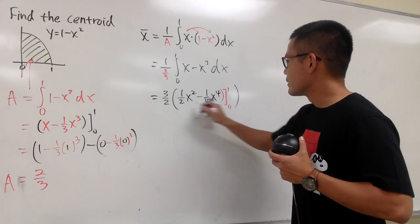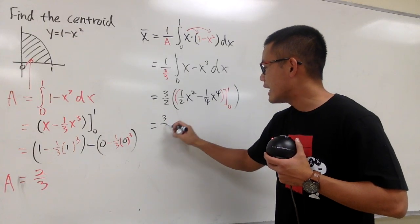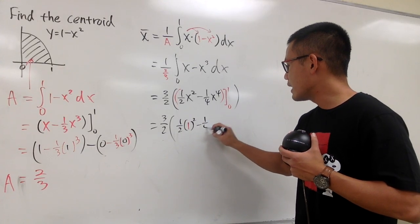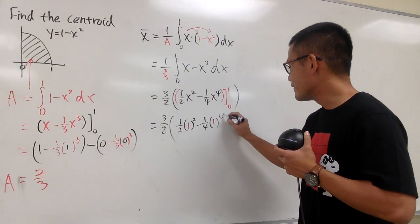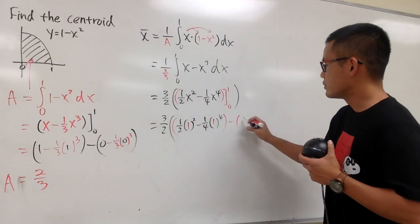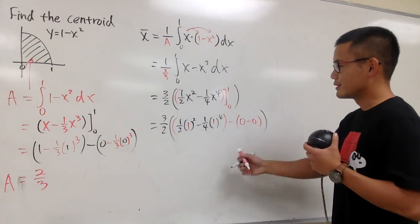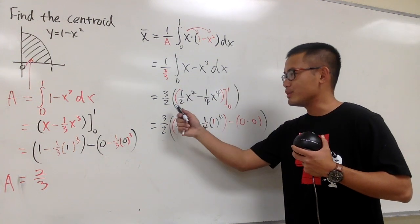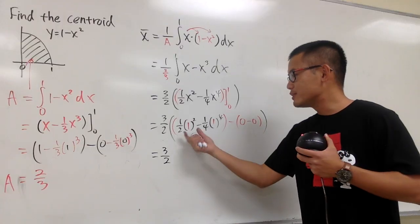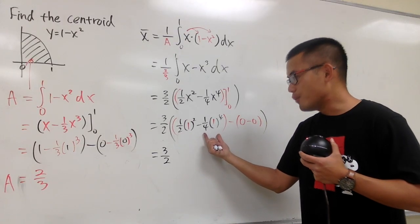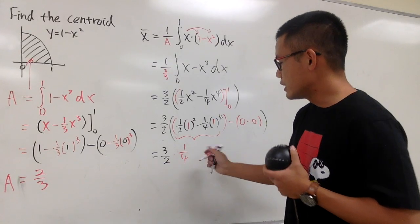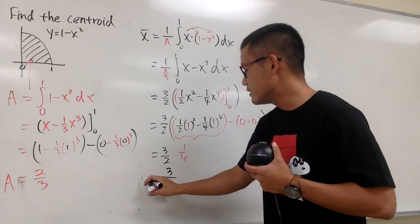Now plugging in — 1 over 2 thirds is 3 halves. We plug in 1 first: 1 half times 1 squared minus 1 over 4 times 1 to the fourth. Then we subtract plugging in 0, which gives 0. So we have 3 halves times the inside: 1 half minus 1 over 4 is 1 over 4. Multiplying 3 halves by 1 over 4 gives 3 over 8. This is x-bar.